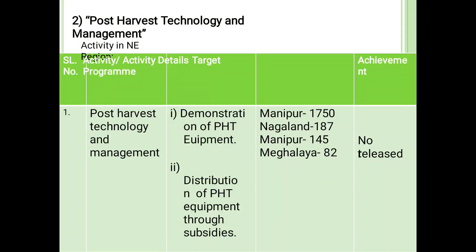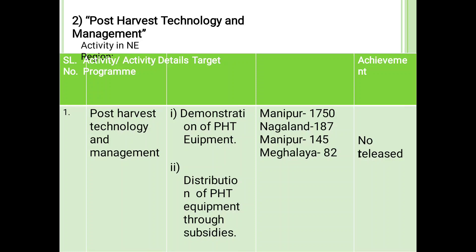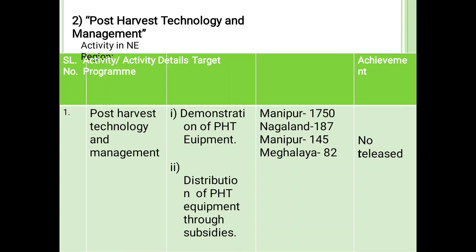Post-harvest technology and management activity program: target — demonstration on post-harvest technology equipment, and distribution of post-harvest technology equipment through subsidies. Achievement in Manipur with scheme pro-rate of 1,750. Nagaland has 187 and the lowest is found in Meghalaya at 82. Currently the schemes are not fully realized by the government.